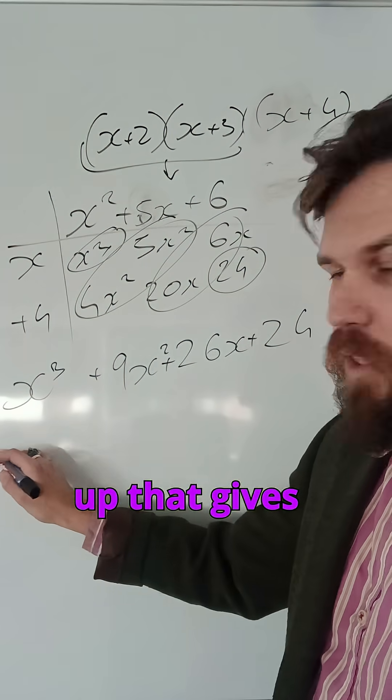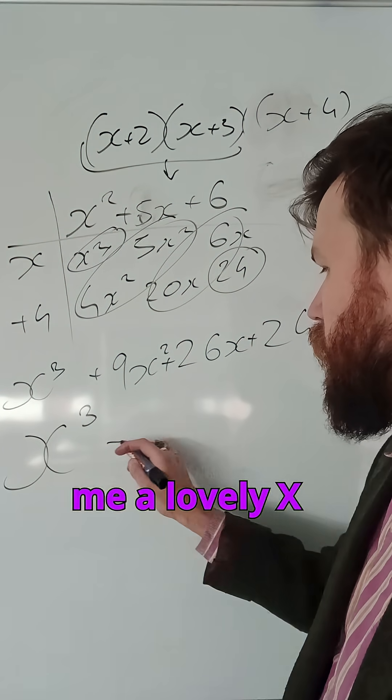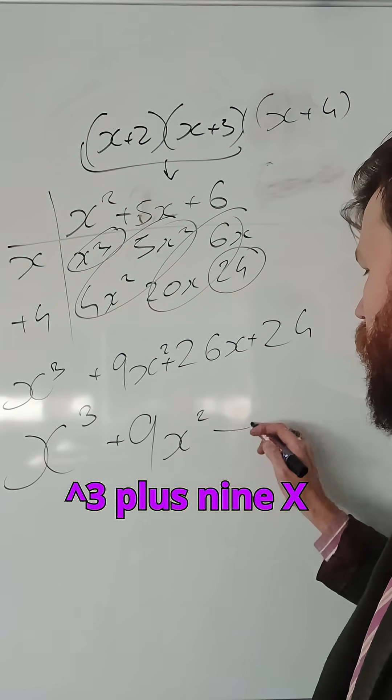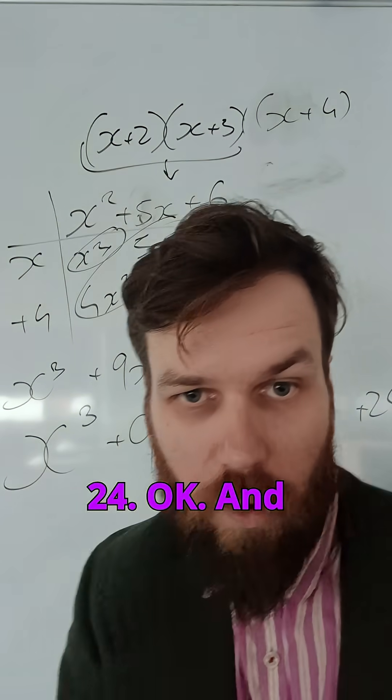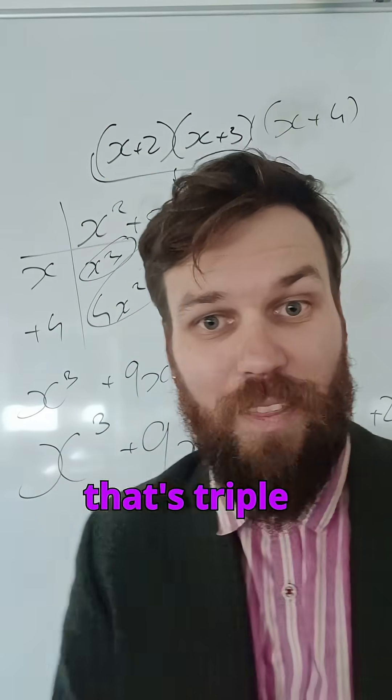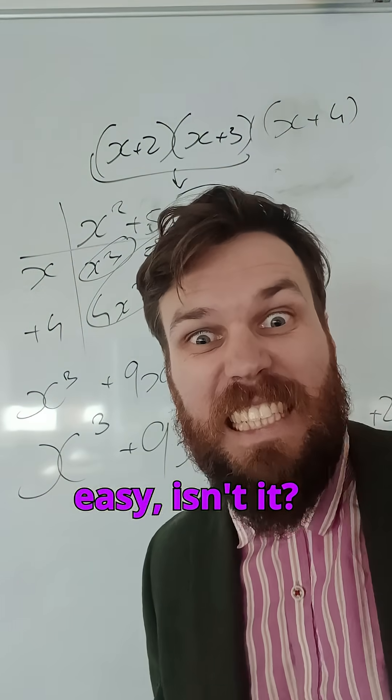Neaten that up, that gives me a lovely x cubed plus 9x squared plus 26x, I'm falling off the page, plus 24. There we go. And that's triple bracket expansion. Easy, isn't it?